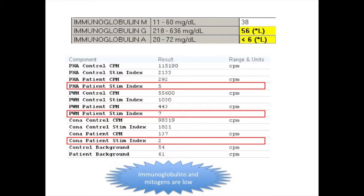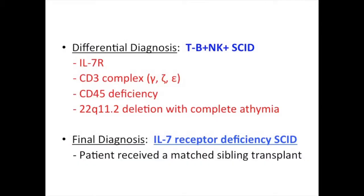For a T-negative, B-positive, NK-positive form of SCID, the differential includes IL-7 receptor deficiency, deficiencies of the CD3 complex, CD45 deficiency, or 22q11.2 deletion syndrome with complete lack of thymus. This patient was confirmed to have a mutation in the IL-7 receptor gene and received a matched sibling transplant, and is doing well.